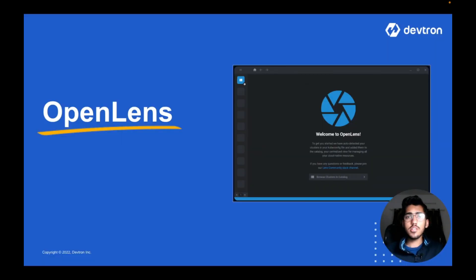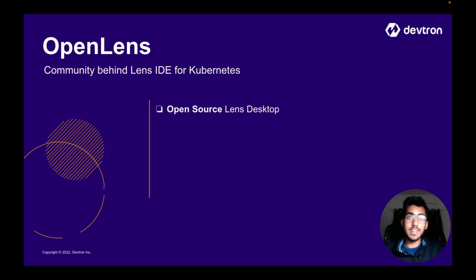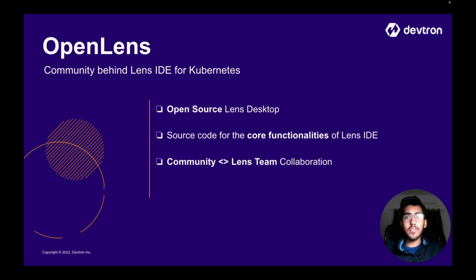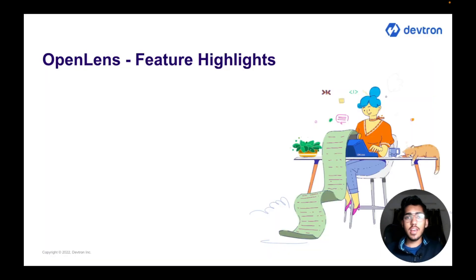Now let's talk about what exactly OpenLens is and what it brings to the table. OpenLens is basically the community behind the Lens IDE for Kubernetes. It is also called the open source Lens Desktop because it is the open source version of the Lens IDE — essentially the source code behind the core functionalities of Lens IDE. OpenLens is where the community and the Lens team collaborate to bring out new features. You can access the source code on the official GitHub repository of Lens, and it is distributed under the MIT license.